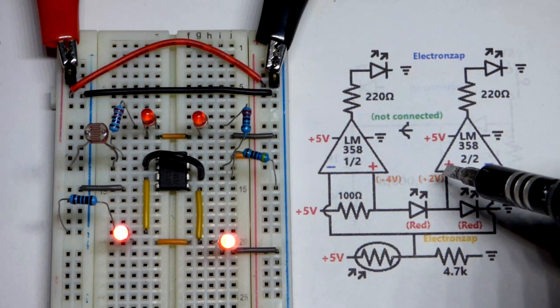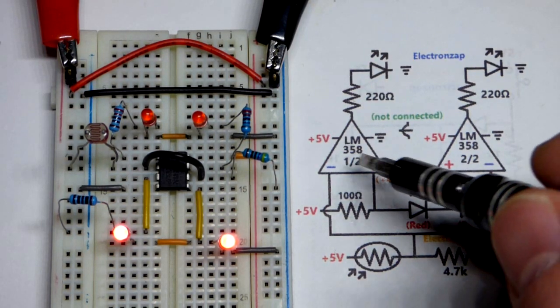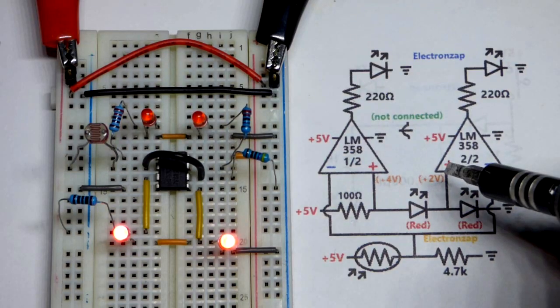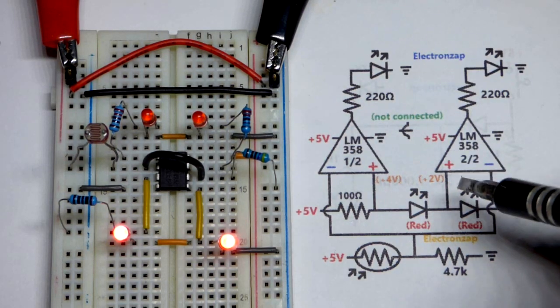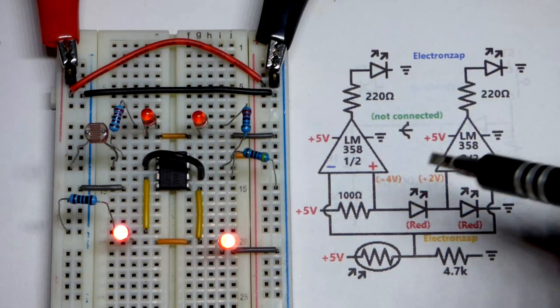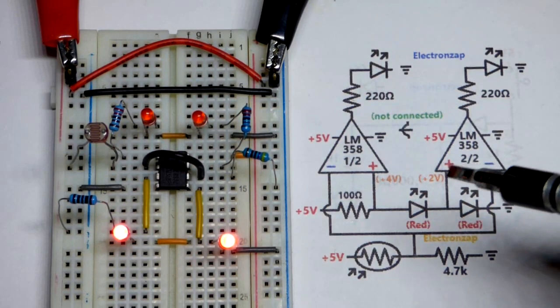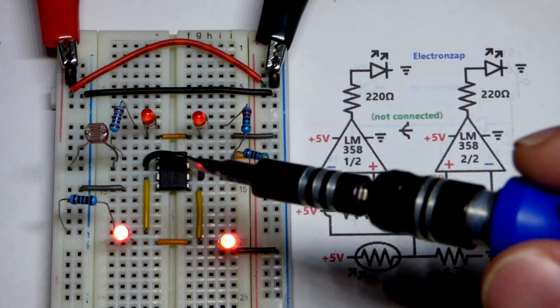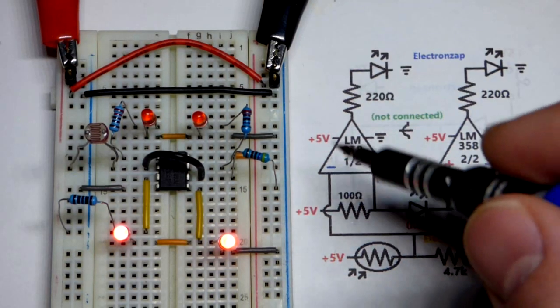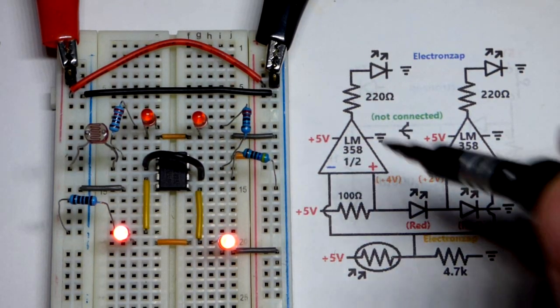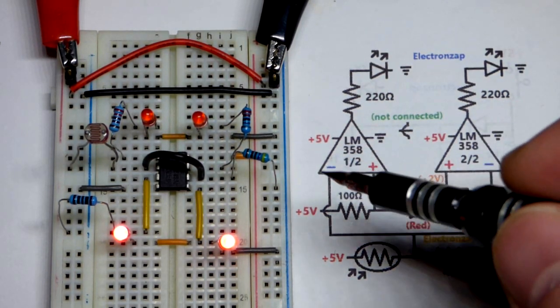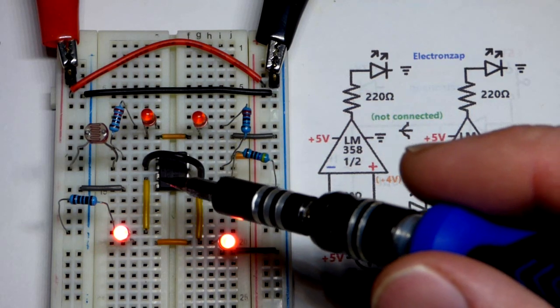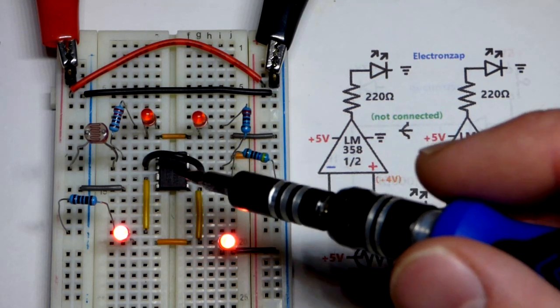They're going to the non-inverting input. Notice the positioning right there. Whenever you're looking at schematics, gotta pay close attention which one's the plus, which one's the minus, because they can be located anywhere. Usually the symbol kind of looks like this, usually it's pointing arrows pointing that way, though they're up and down.